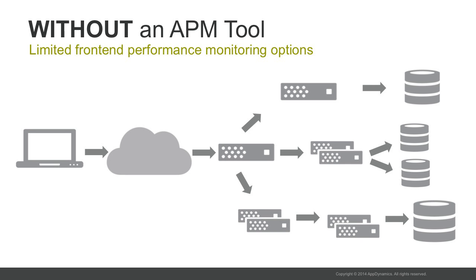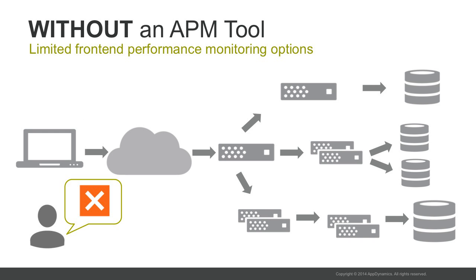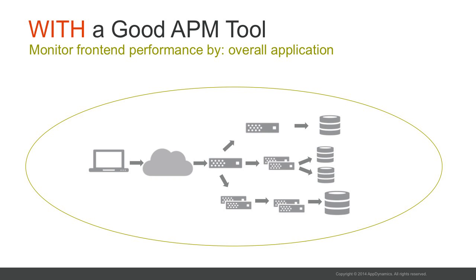Without an APM tool, you have limited performance monitoring options. Let's take front-end performance for example. Options to gain full visibility into how users are experiencing your application are very limited. You can run test transactions from time to time, or you can just wait for user complaints, which puts you in a reactive mode. With a good APM tool, you should be able to monitor front-end performance constantly, so at any given moment you know the overall performance and health of the application.